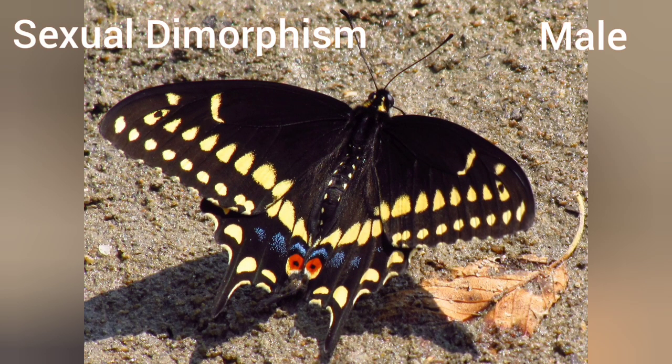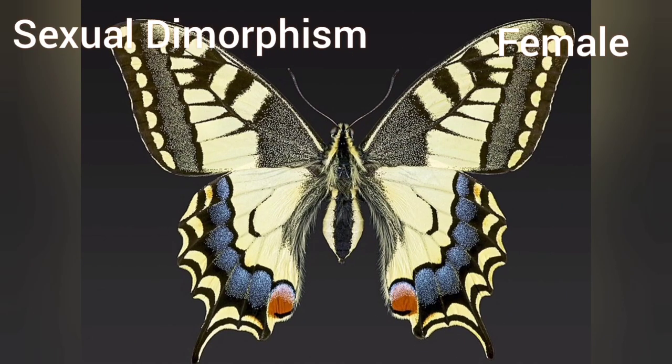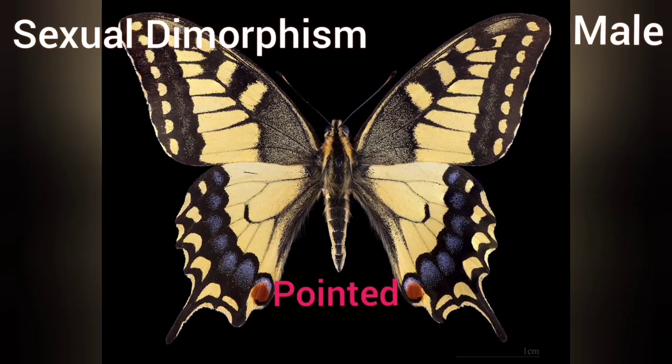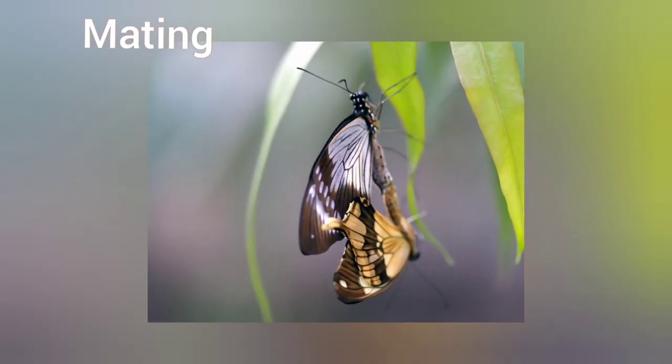The male is dark and more attractive, while the female is light. The female abdomen has a flat tip and the male abdomen is pointed.